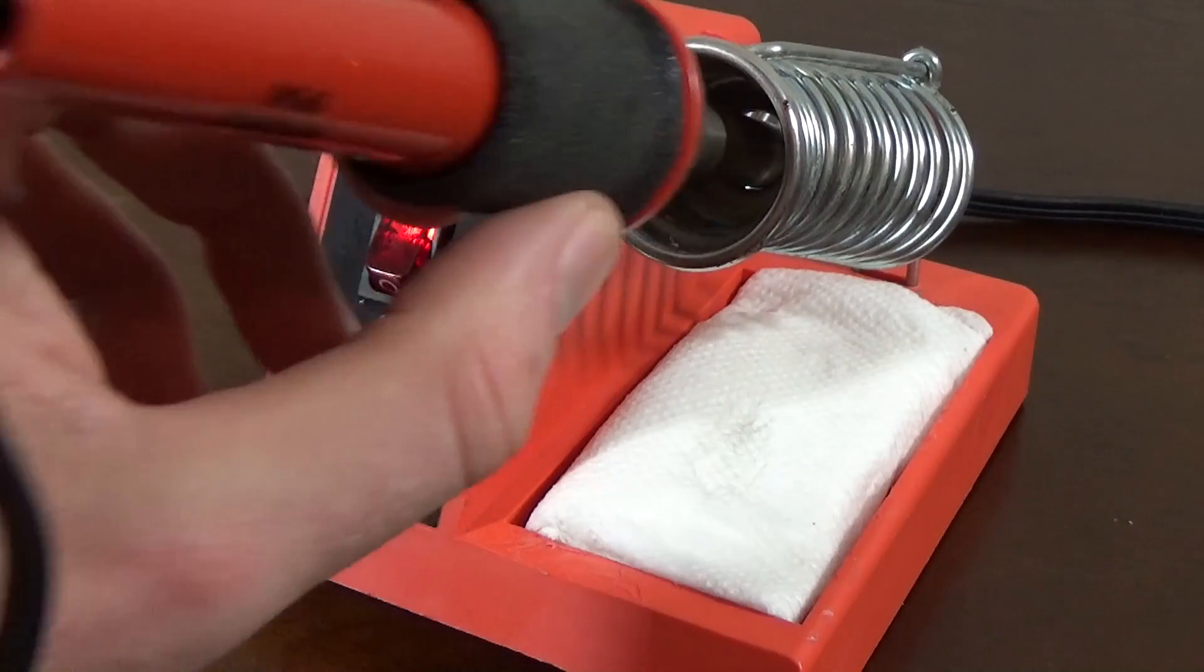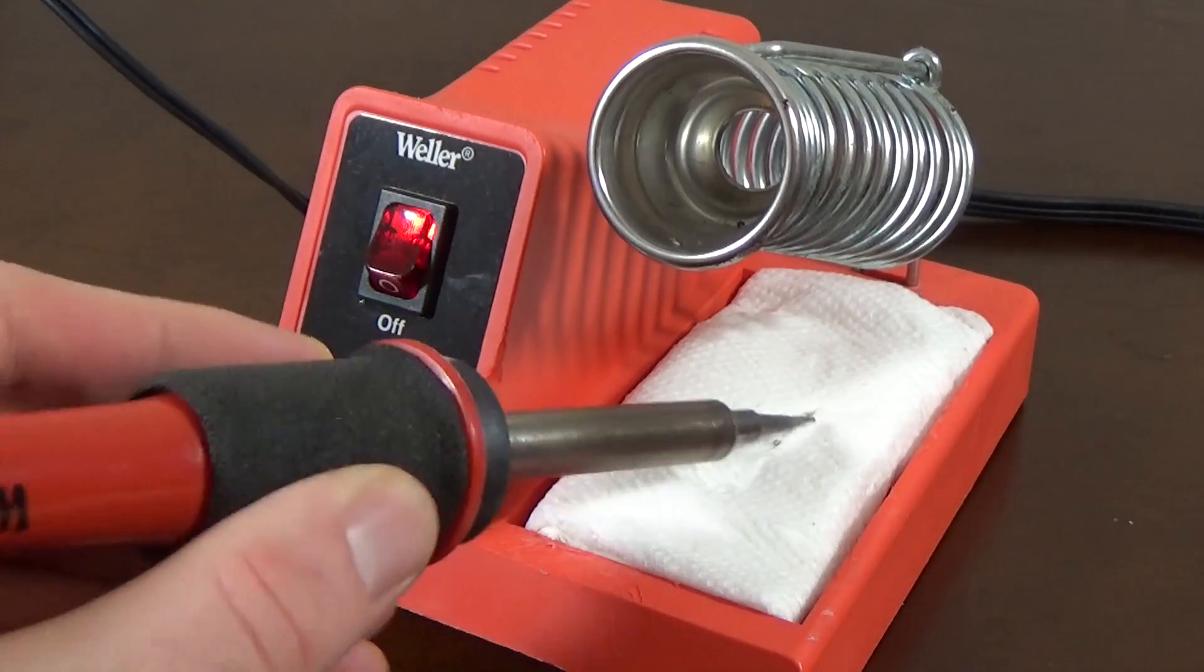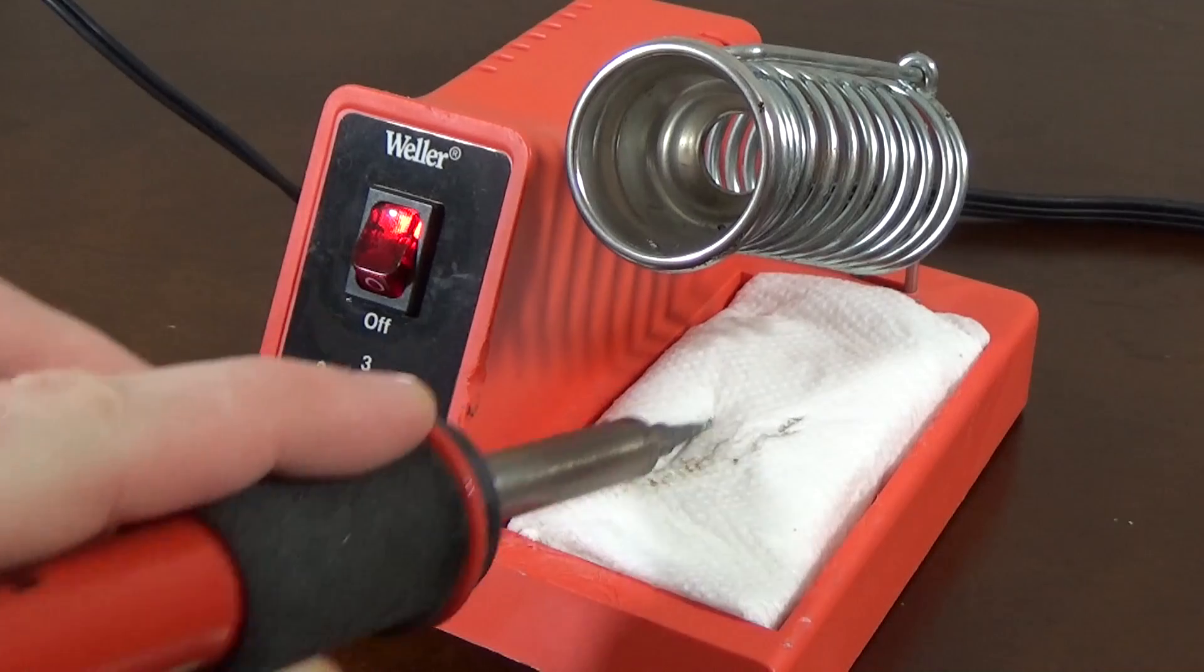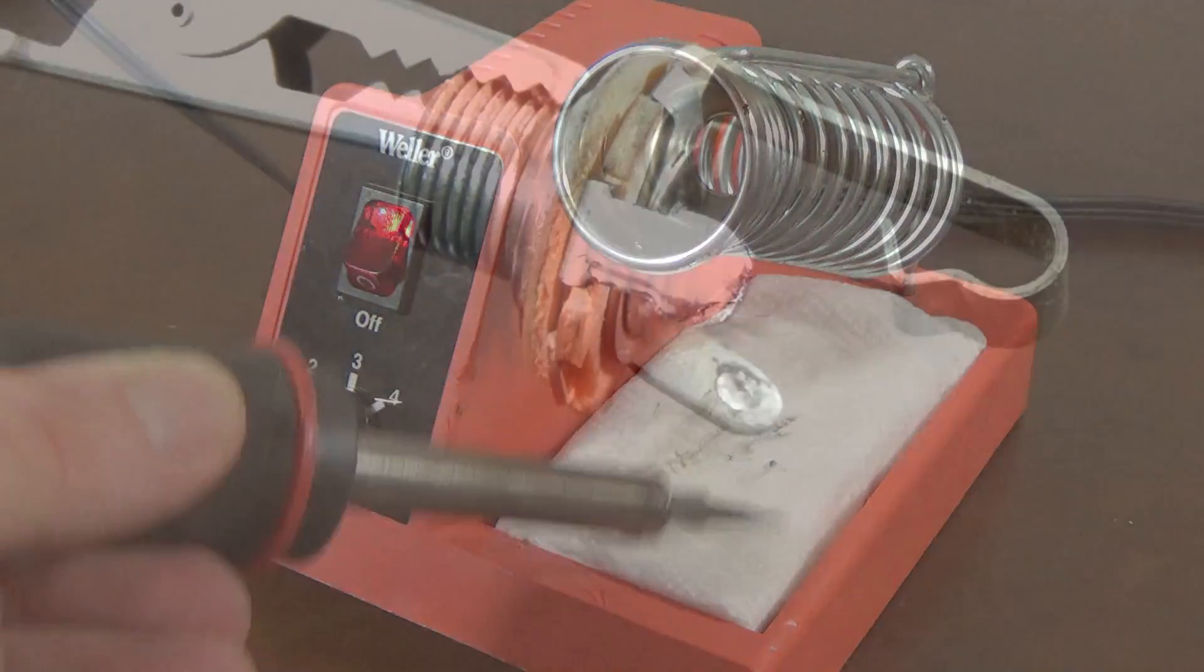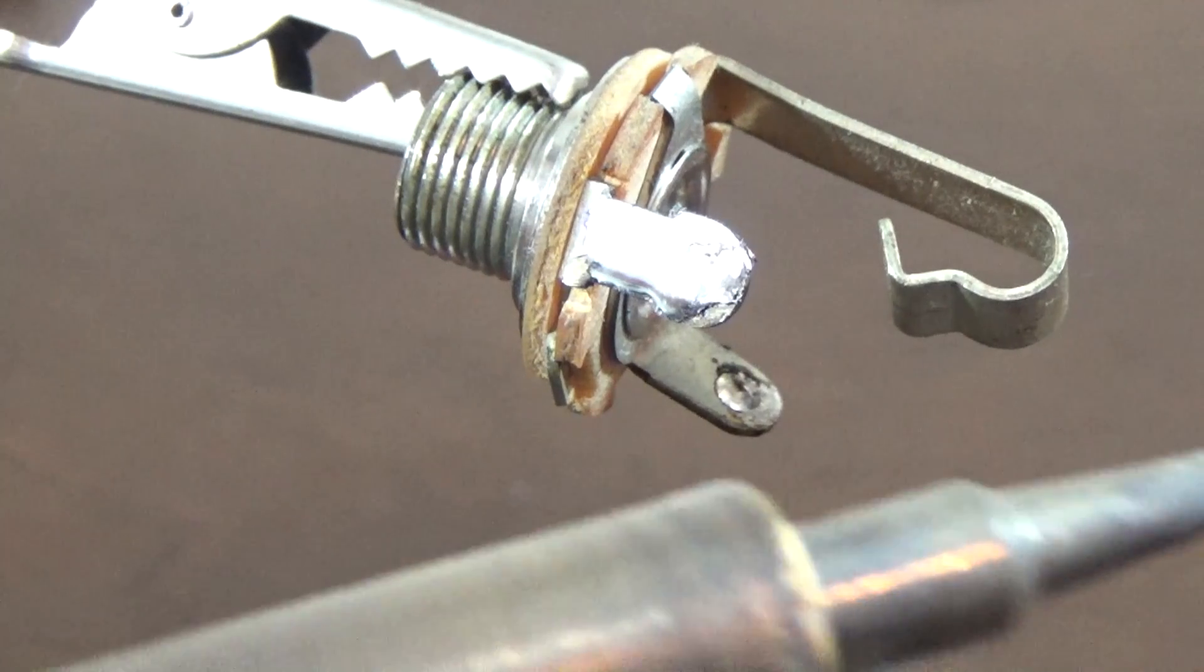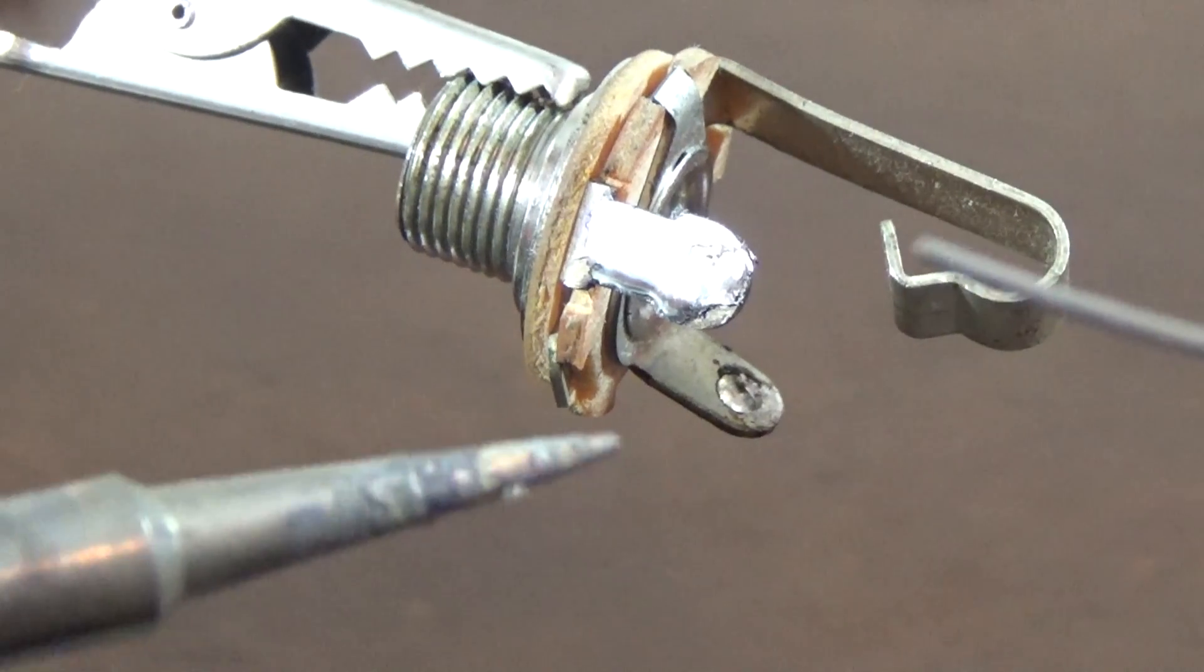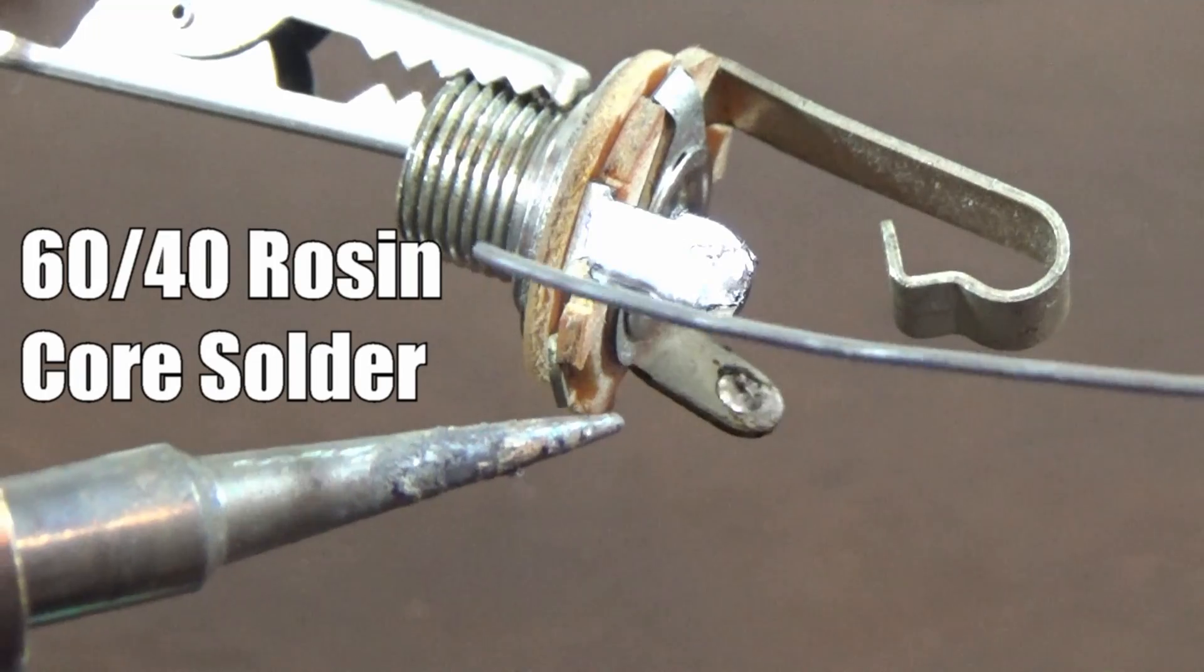Before we start to solder it's best practice to clean off the soldering iron tip. You can use a lightly damp sponge or paper towels. After I clean off the soldering tip I go ahead and put a little solder on the wire. I'm using rosin core solder meaning there's flux in the center.